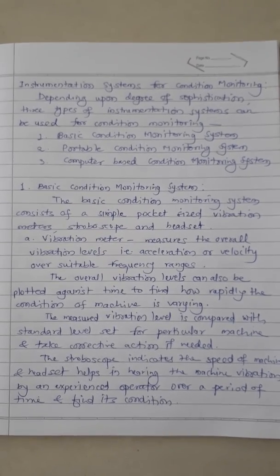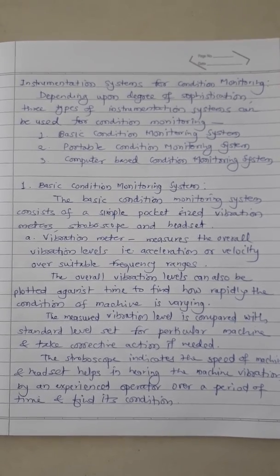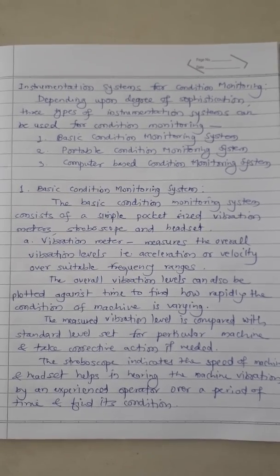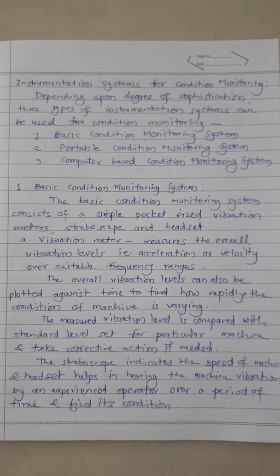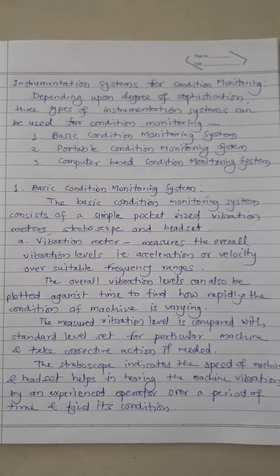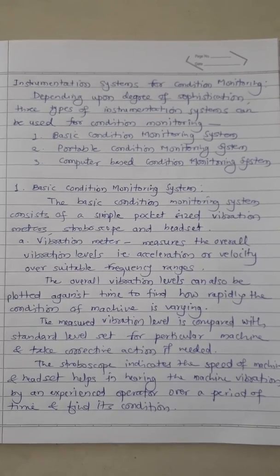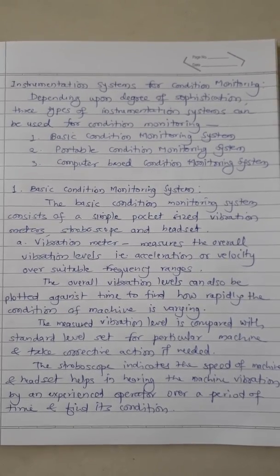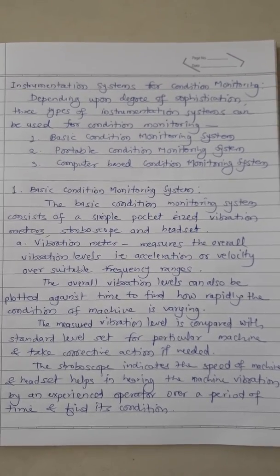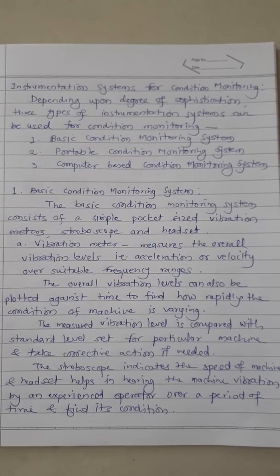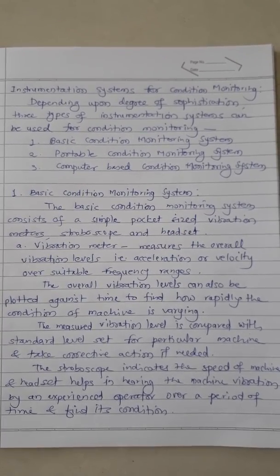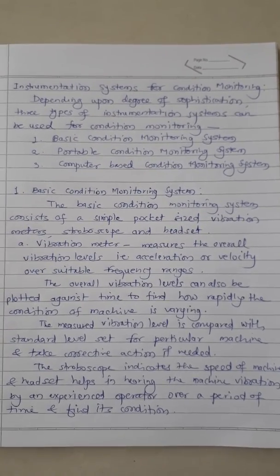Instrumentation systems for condition monitoring: depending upon the degree of sophistication, three types of instrumentation systems can be used for condition monitoring — basic condition monitoring system, portable condition monitoring system, and computer-based condition monitoring system.